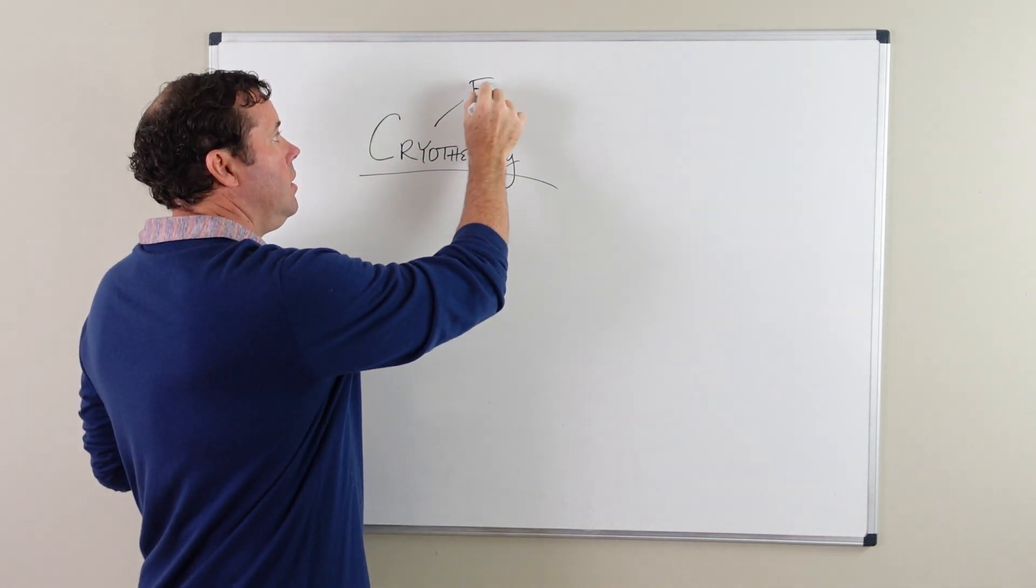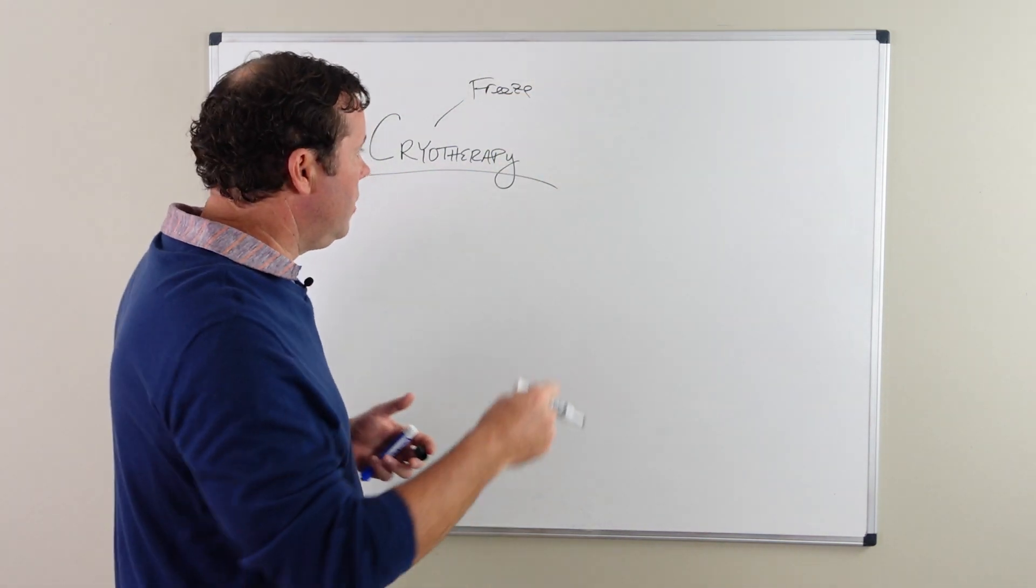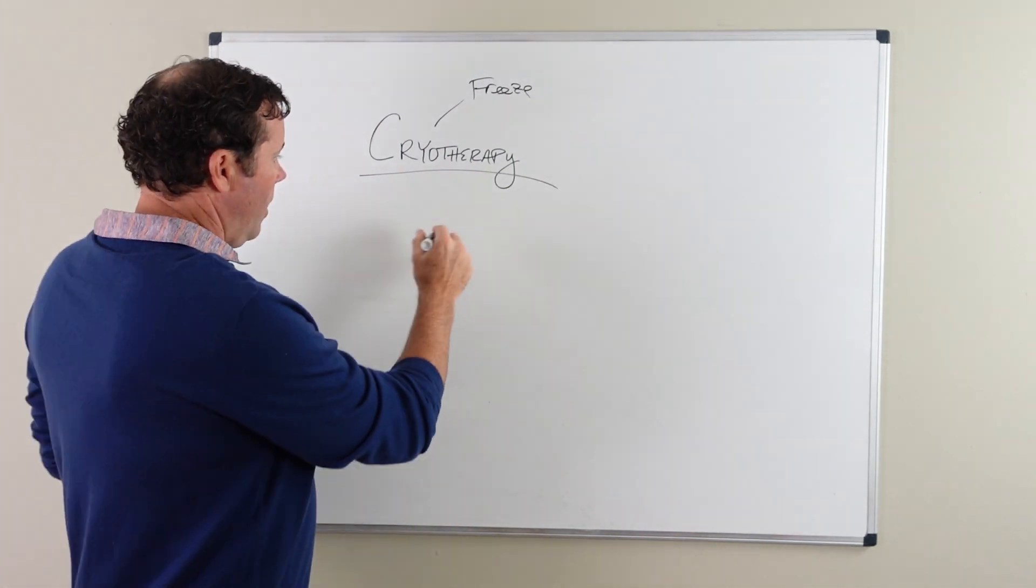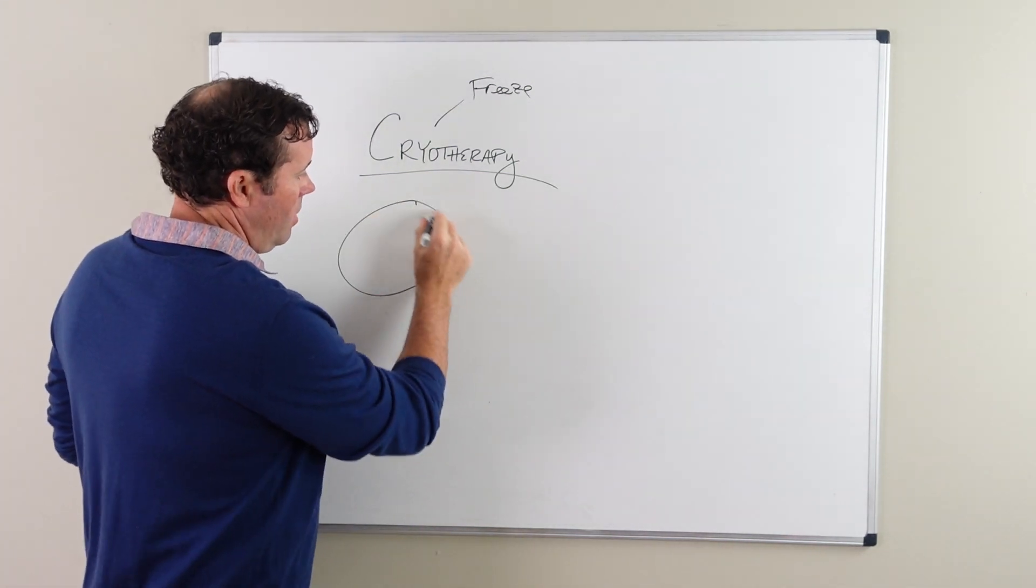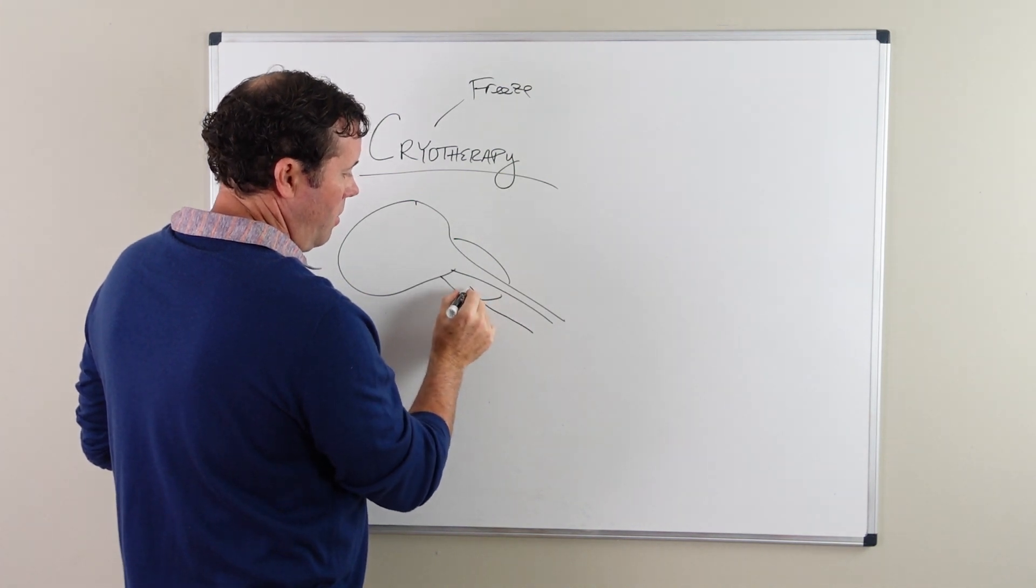Cryo means freeze, so it is a freeze-thaw cycle where needles are placed into the prostate. So here is bladder, prostate. A needle is put into the prostate.